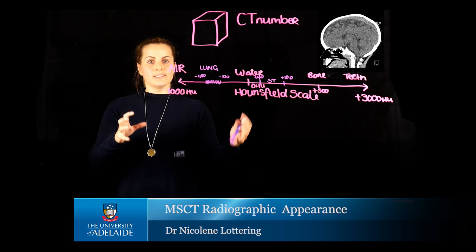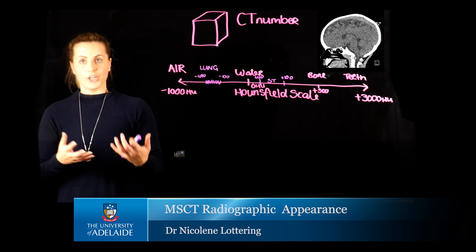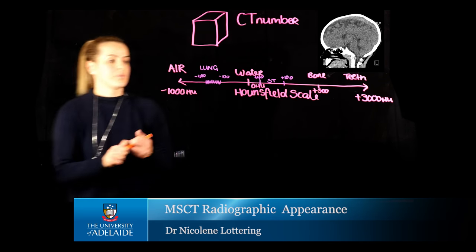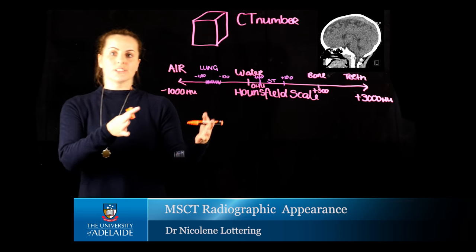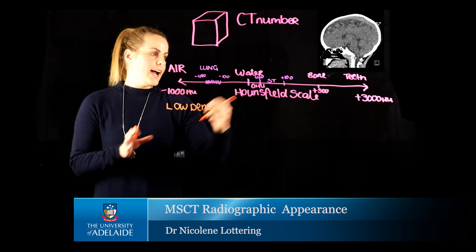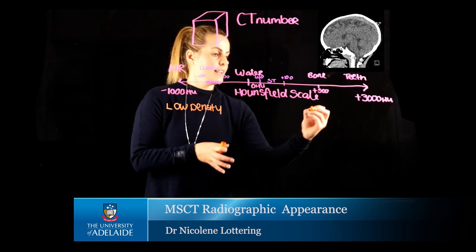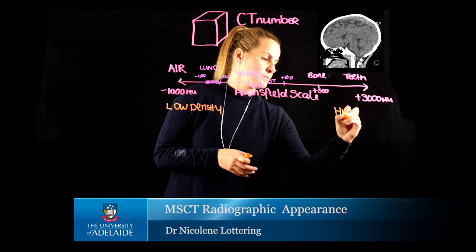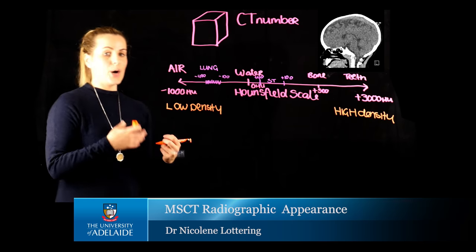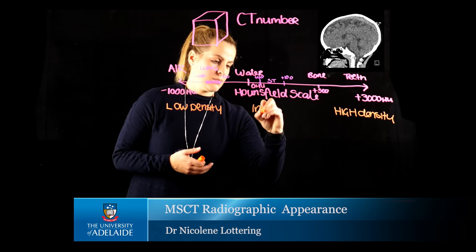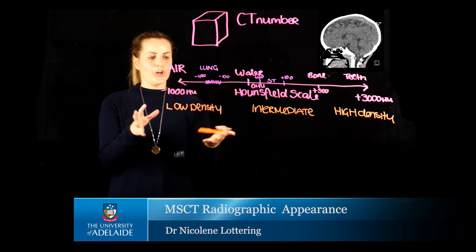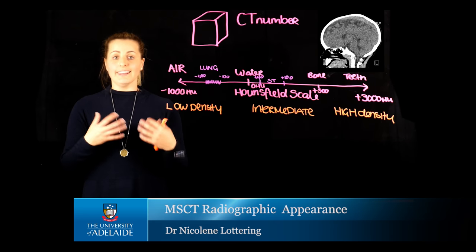With respect to your exams, when discussing radiographic appearance of certain structures, there is specific terminology we use. Structures such as air are our low-density structures. Structures such as bone, teeth, and metal are our high-density structures. Everything in between is our intermediate density. However, low, intermediate, and high density are lay person terminology.